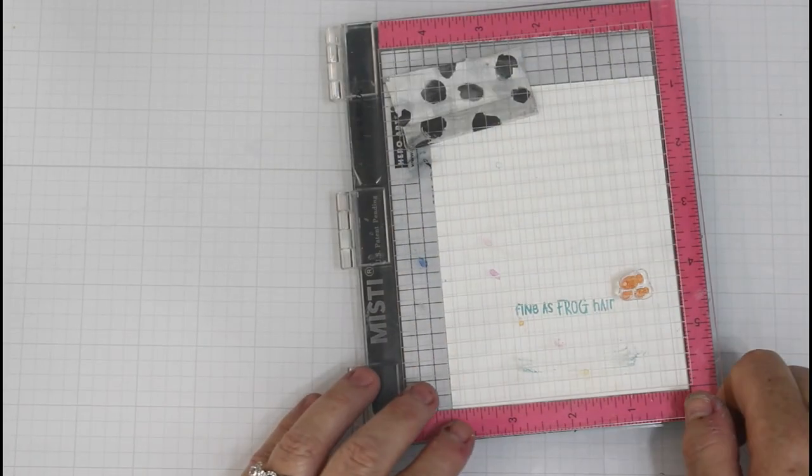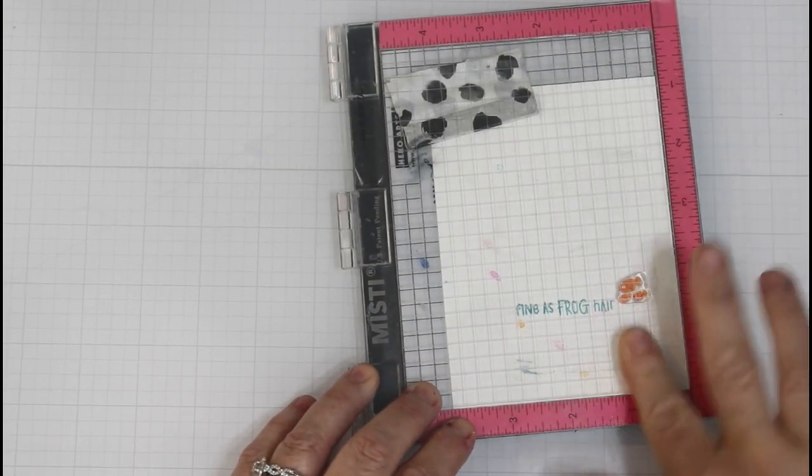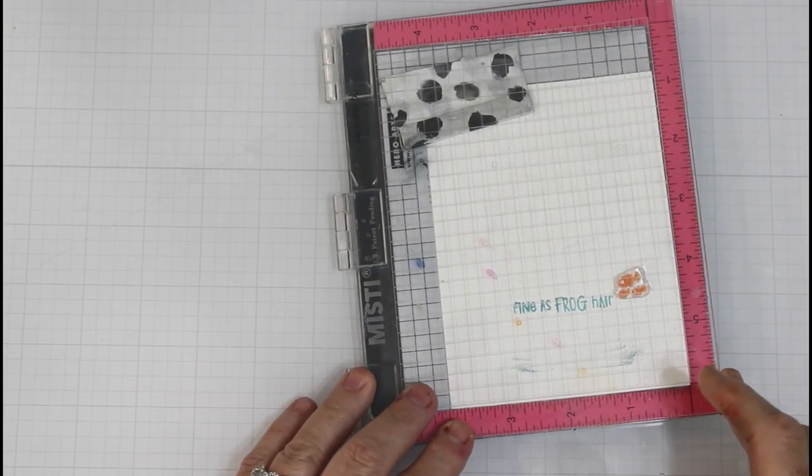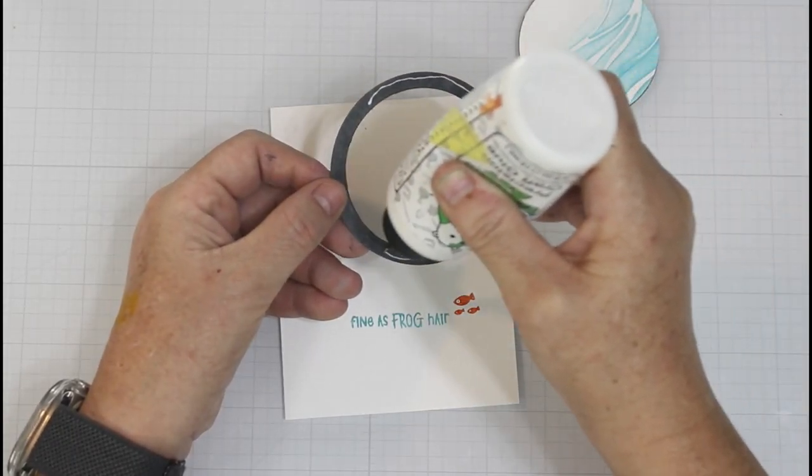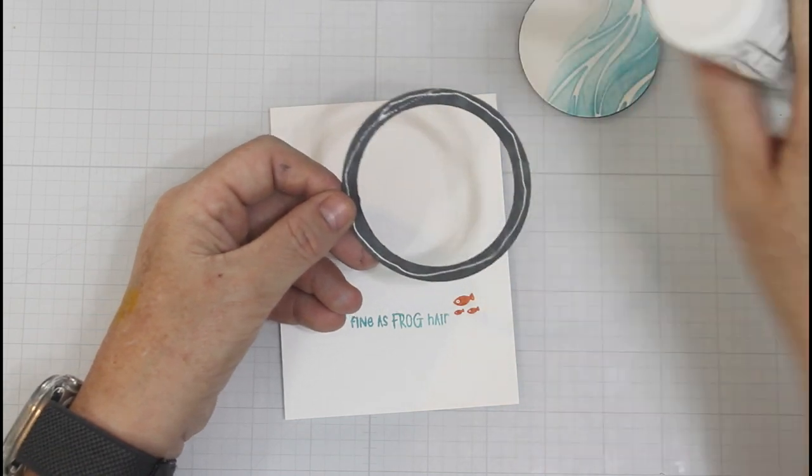Now, you know me, I like a little bit of a pop of red. So I came in with Crackling Campfire, which is a red orange, and I stamped this little fish from the same beach frog stamp set.